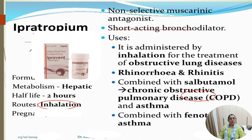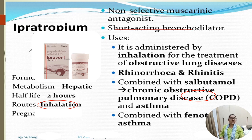Ipratropium bromide is a non-selective muscarinic antagonist and a direct bronchodilator. It is administered by inhaler route for the treatment of obstructive lung disease, rhinorrhea, rhinitis, and is combined with salbutamol for chronic obstructive pulmonary disease and asthma.